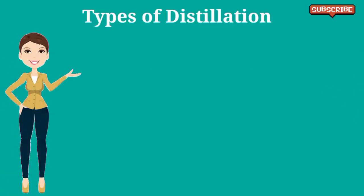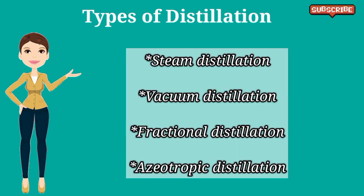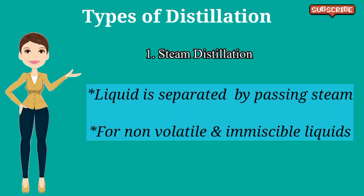There are many types of distillation, but the most common types are: Steam Distillation, Vacuum Distillation, Fractional Distillation, and Azeotropic Distillation. Steam Distillation is a type of distillation in which liquid is separated by passing steam. It is used for those liquids which are not very volatile and immiscible with water. Example: distillation of orange oil.